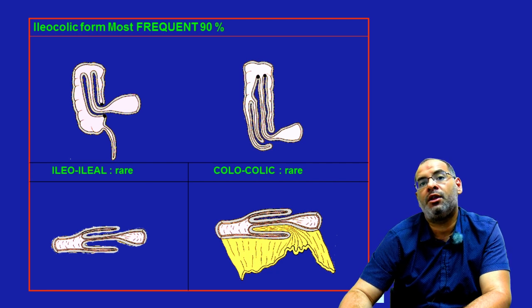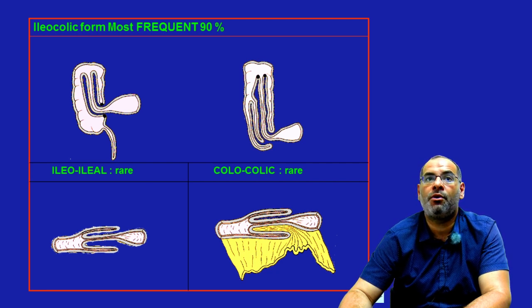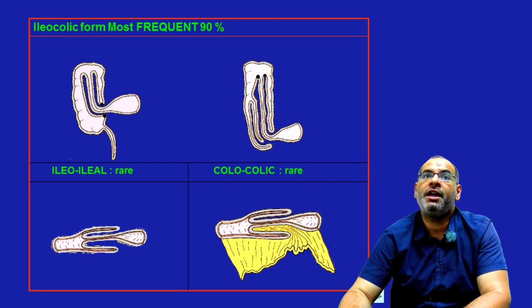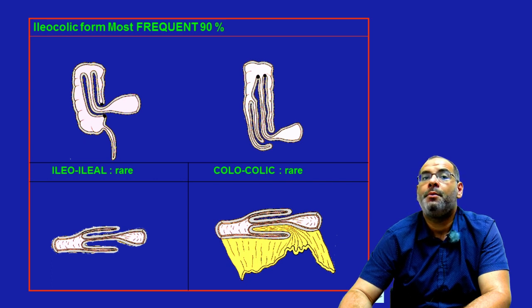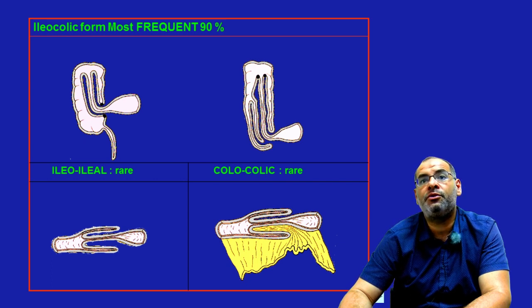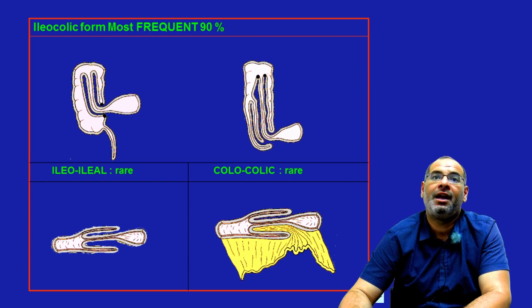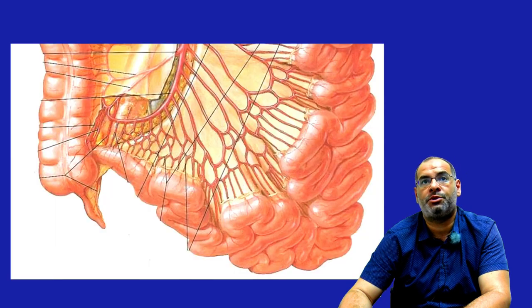We can have different anatomopathologic forms. We can have the ileocolic form, which is most frequent, but we can have also ileal form or colicolic forms that are rarer and most often due to secondary intussusception.